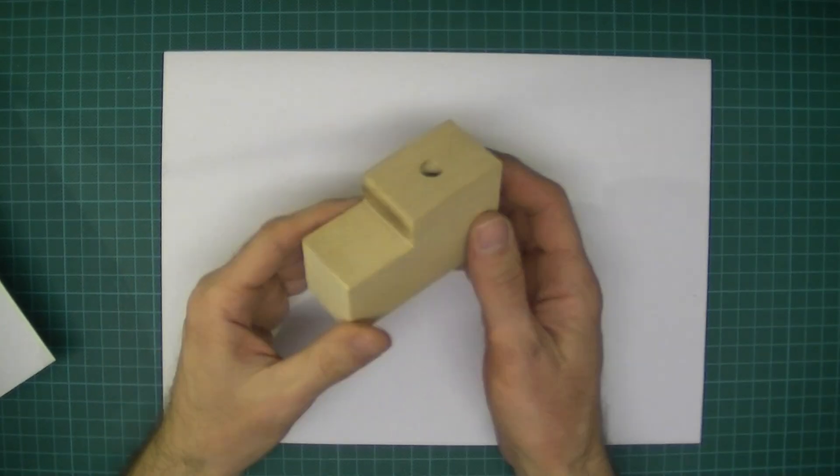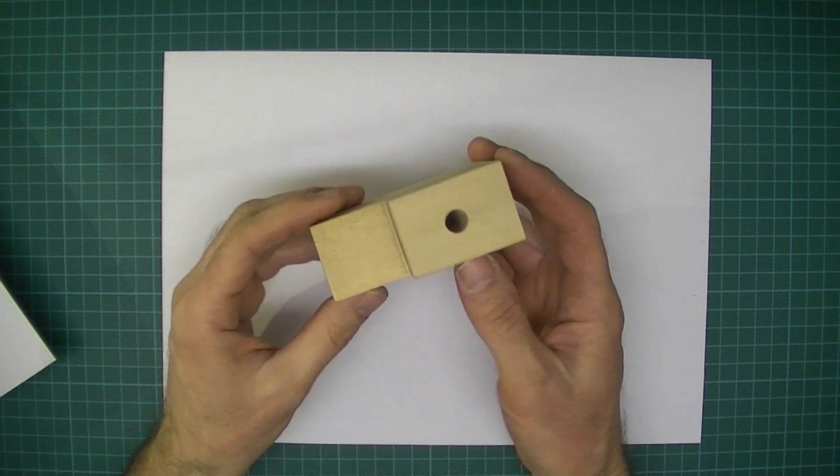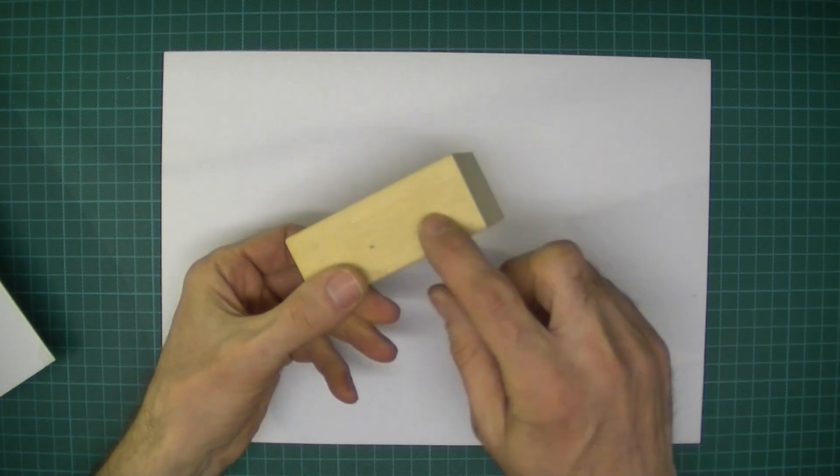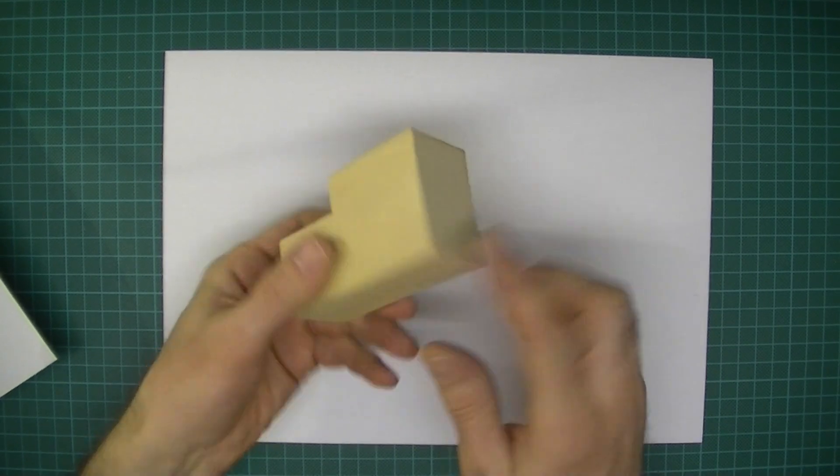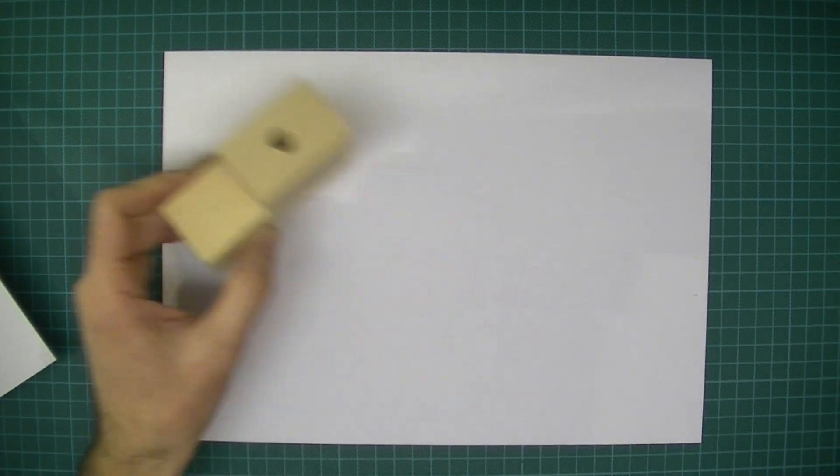Okay, in this video I will show you how we could draw a simple object like this, just a step block with a hole in it. Notice the hole is blind—it doesn't go all the way through. So we will draw this step block in isometric projection.